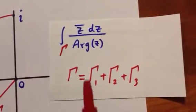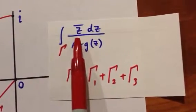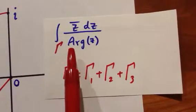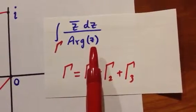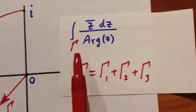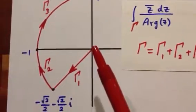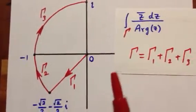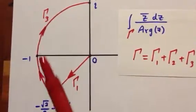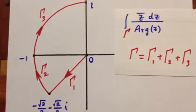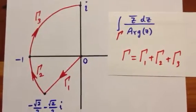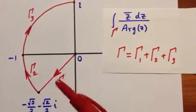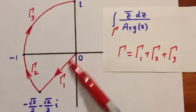The problem is to integrate the conjugate of Z times DZ divided by the principal argument of Z over gamma, where gamma is this contour. Now we need to split this into three little smooth curves, one for this straight line.